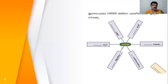How many thousands are in 1,00,000? 100,000 is equal to 1,00,000. 1,000 is equal to 1 lakh. 10,000 are equal to 1 lakh.